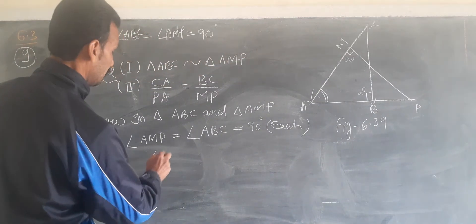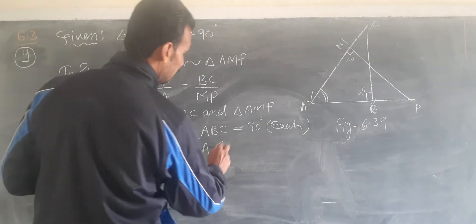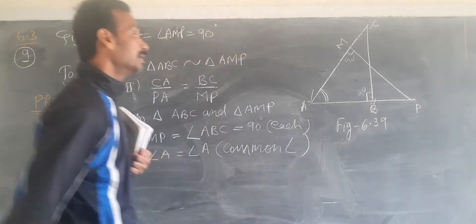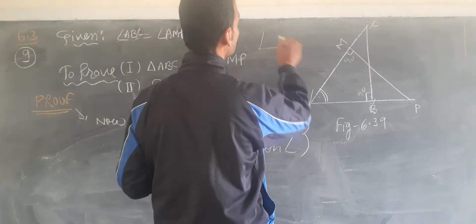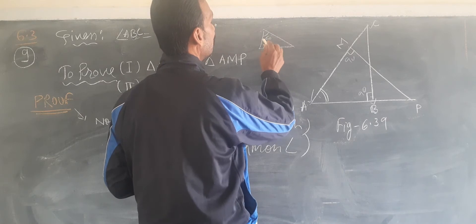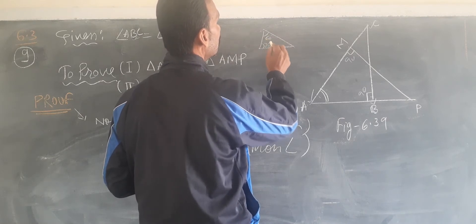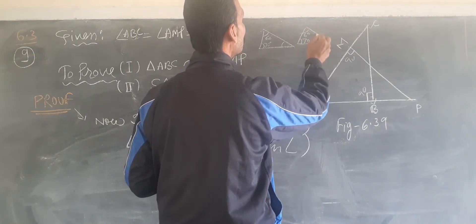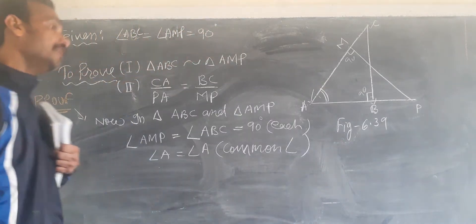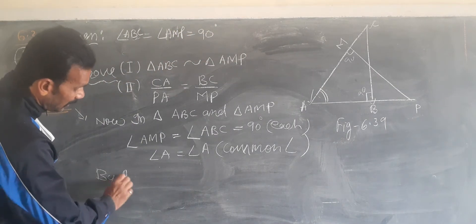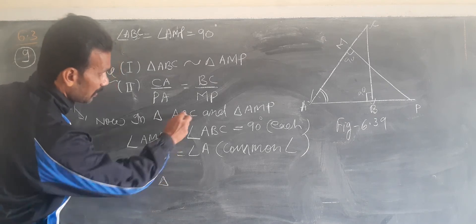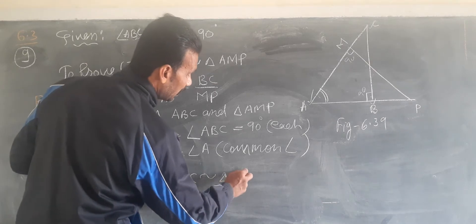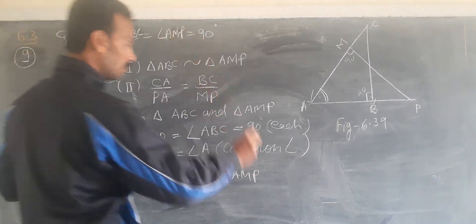Angle A equal to angle A is common angle. Therefore, by AA (angle-angle), triangle ABC is similar to triangle AMP.